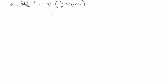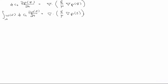Just like we've done before, we're going to multiply by an arbitrary function and integrate over the domain. At this point is where we'll make the decision that the pressure is two-dimensional, so it's only a function of x and y.